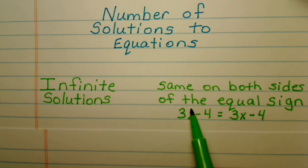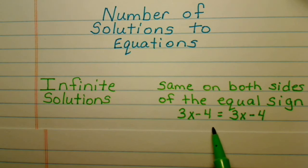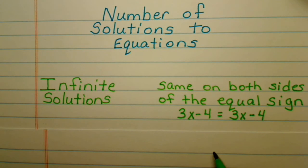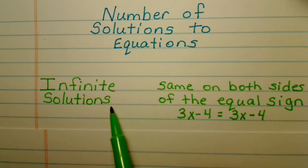If we substituted in a one, we would have three times one is three. Three minus four is negative one. Negative one is equal to negative one, because you would get the same answer over here. So basically, when you follow through on your multi-step equations and you get to the point where you have the exact same thing on both sides, your answer is infinite solutions.